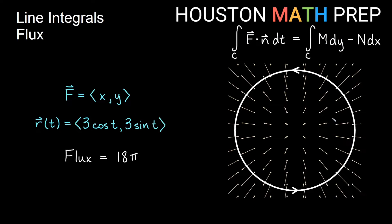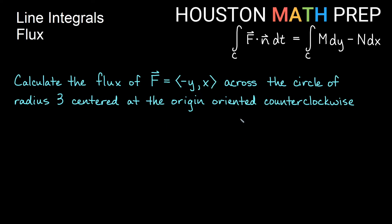Looking at our curve and vector field together in one picture, we get an idea of why the flux is positive 18π. Traveling counterclockwise around this curve, at any point the vector field is flowing to my right as I face along the curve. We're getting a nice outward flow through this path. Let's look at our next example to get more of an idea of flux.